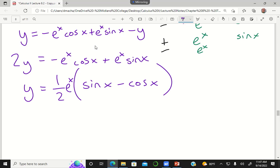I say y equals 1 half times e to the x, and then you could write sine minus cosine to simplify that up. But, okay, so that's how Wolfram Alpha got their answer. That's how it works.